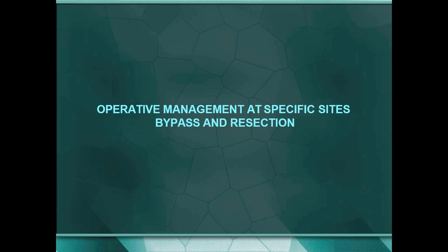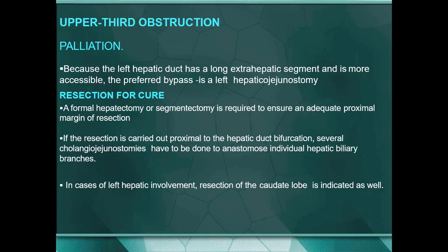As surgeons we must know the operative management at specific sites. For upper third obstruction palliation: because the left hepatic duct has a long extra-hepatic segment and is more accessible, the preferred bypass is a left hepatico-jejunostomy. For resection for cure, a formal hepatectomy or segmentectomy is required to ensure an adequate proximal margin. If resection is carried out proximal to the hepatic duct bifurcation, several cholangiojejunostomies must be done to anastomose individual hepatic duct branches — a difficult task requiring specialized centers. In case of left hepatic involvement, resection of the caudate lobe is indicated as well.